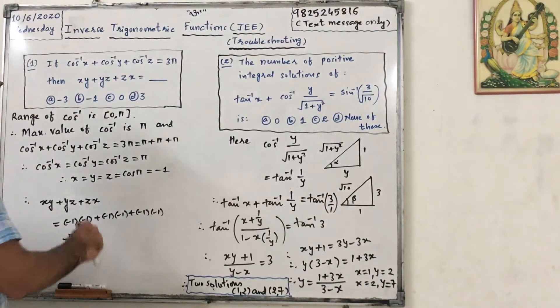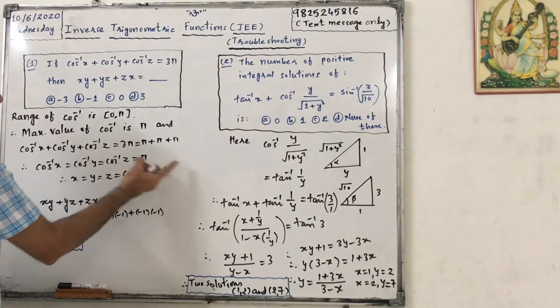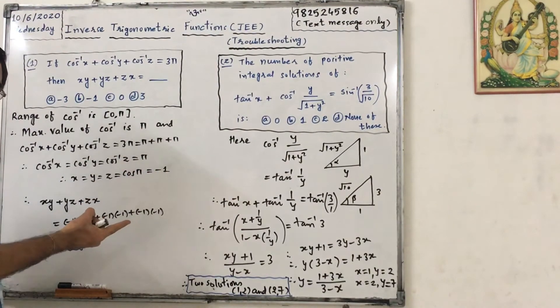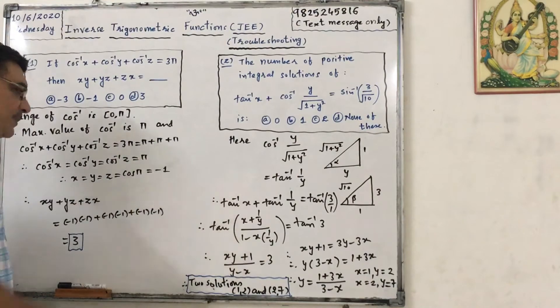Okay, so we can write x equals to cos pi, y equals to cos pi, z equals to cos pi, and value of cos pi is minus 1.